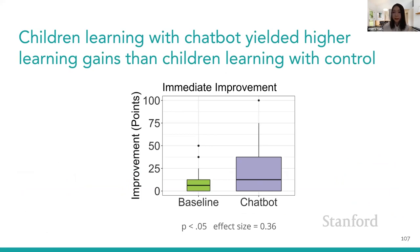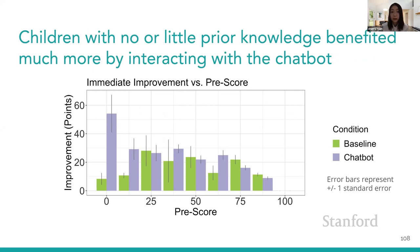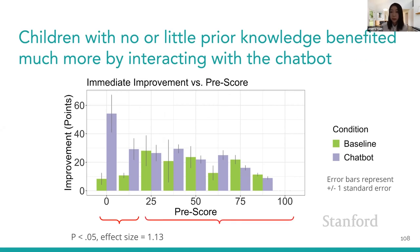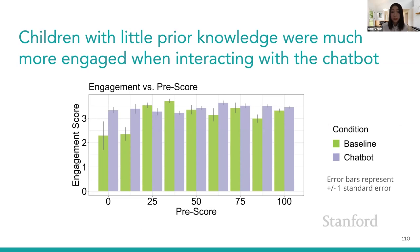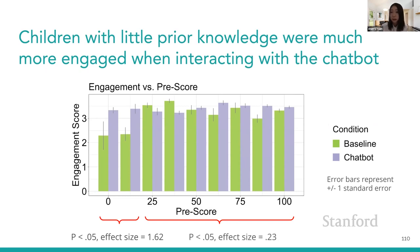What is the takeaway from this study? Children who learned with the chatbot yielded higher learning gains than those with the control. Segmenting by prior knowledge, children with little or no prior knowledge benefited much more from the chatbot with an effect size of 1.1. Children with moderate to high prior knowledge still benefited, with a smaller effect size of 0.3. For engagement, children with the chatbot were much more engaged, with effect sizes of 1.6 for low prior knowledge and 0.2 for higher prior knowledge children.